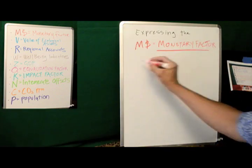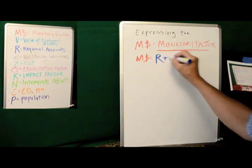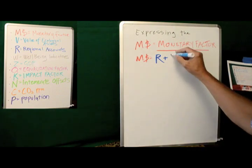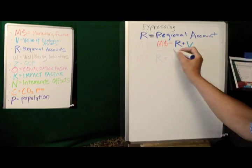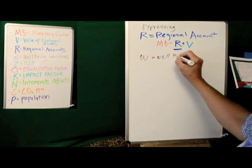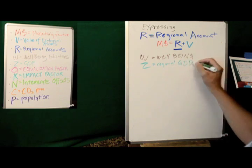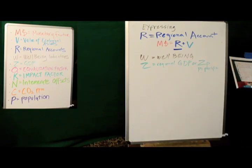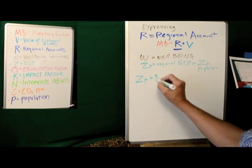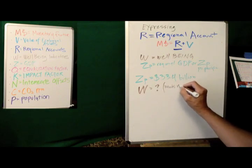Expressing the monetary factor is a straightforward linear equation. M equals R plus V. R is the variable for our regional accounts, and V represents the value of our ecological assets. The GDP of the Pacific collectively is about $33.4 billion, according to World Bank figures. This includes not only small Pacific Island states and territories, but also Papua New Guinea. This does not include Australia or New Zealand, who is part of the OECD.